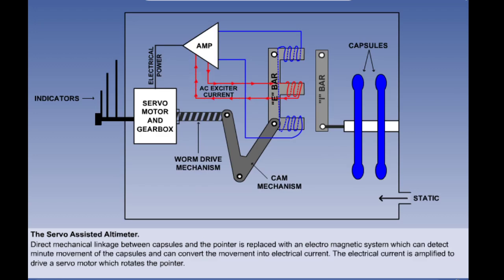A further refinement of the pressure altimeter is the servo-assisted altimeter which gives improved accuracy particularly at high altitudes where the change in air pressure is much smaller than at low altitudes for a given change in height. The principle of the servo-assisted altimeter is that direct mechanical linkage between the aneroid capsules and the pointer is replaced with an electromagnetic system. Minute movements of the capsules can be sensed by this system and the movements converted into electrical current by an electromagnetic pick-off. The electric current generated is amplified and used to drive a servo-motor which rotates the pointer.